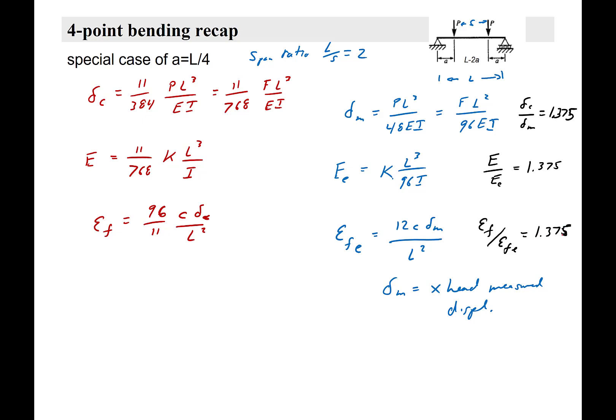So again, out of the machine, if the machine gives you a stress-strain plot, because it automatically calculates for you, and you put in the right load span and everything, but you're using the cross-head displacement, you have to multiply your strain that comes out of the machine in the raw data file by 1.375, and you'll get what the strain is actually in the material, the maximum strain.